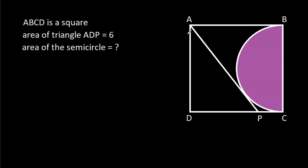In this video, we have been given that ABCD is a square and the area of triangle ADP is 6. We have to find the area of the semicircle.